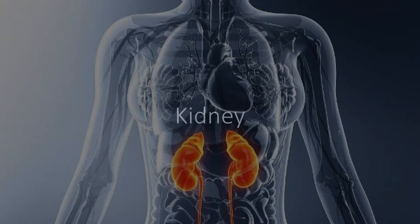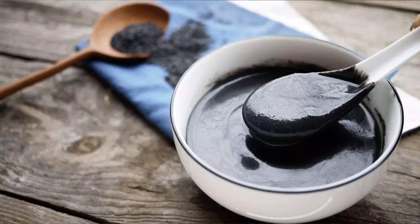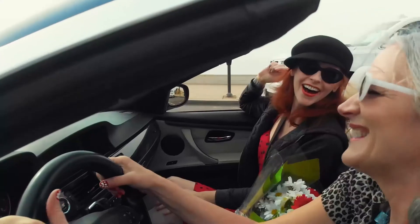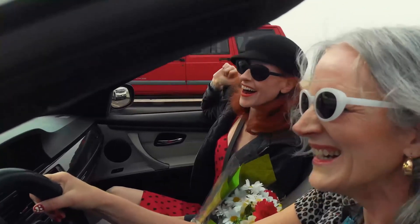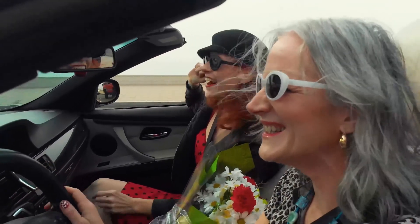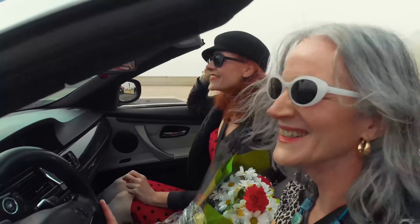The kidney represents the function of storing and mobilizing the fundamental substance that supports physiological activities, which we call essence. This overlaps in part with the endocrine and reproductive systems.